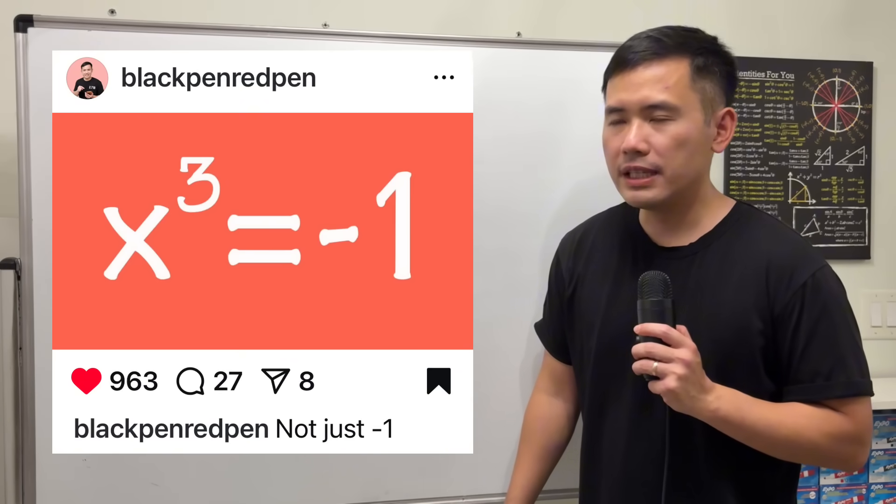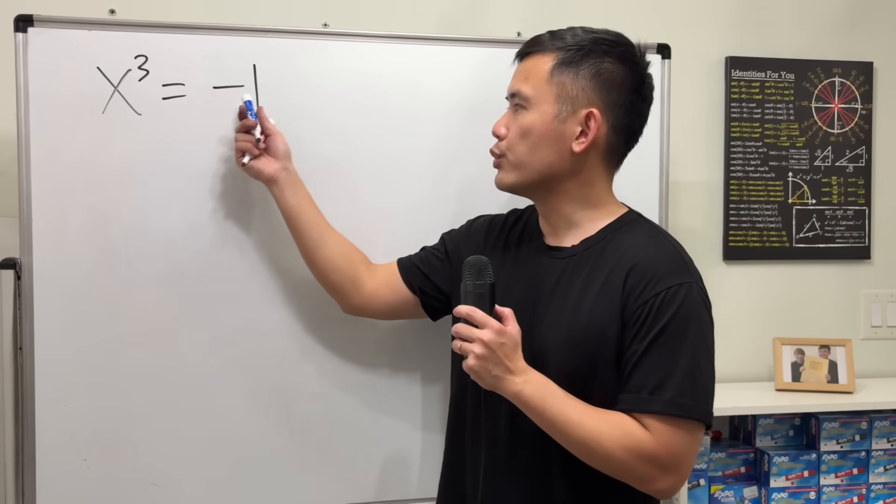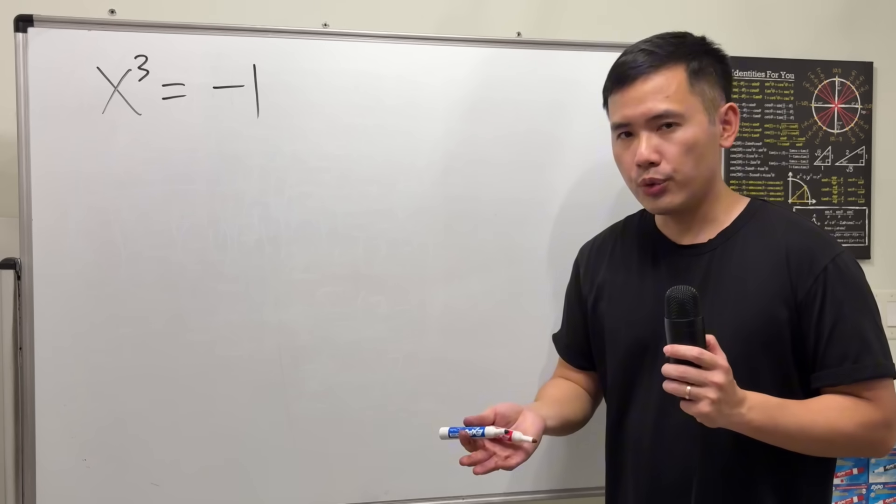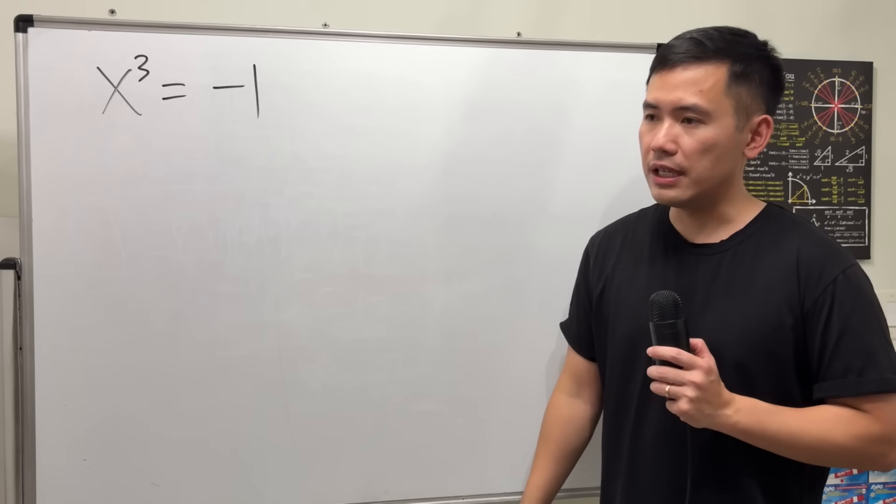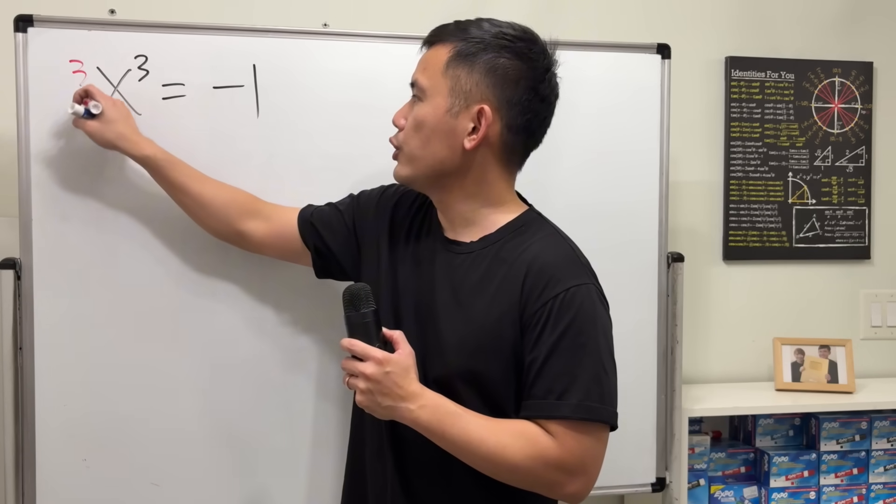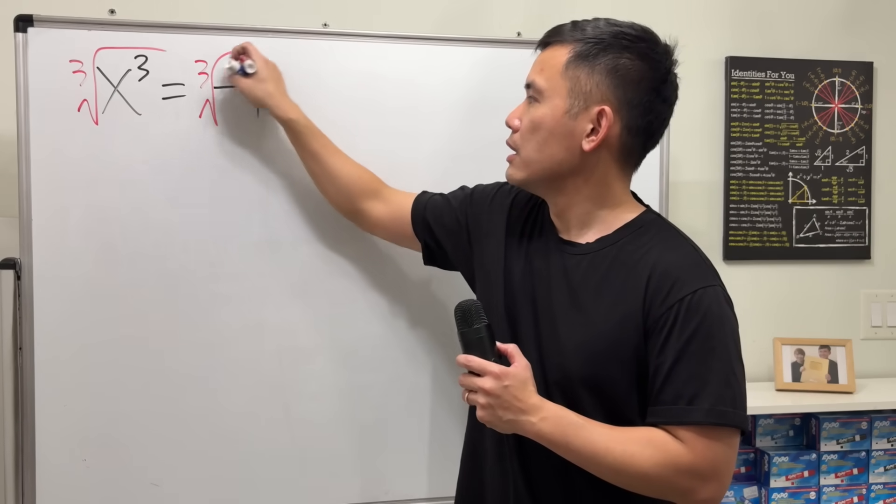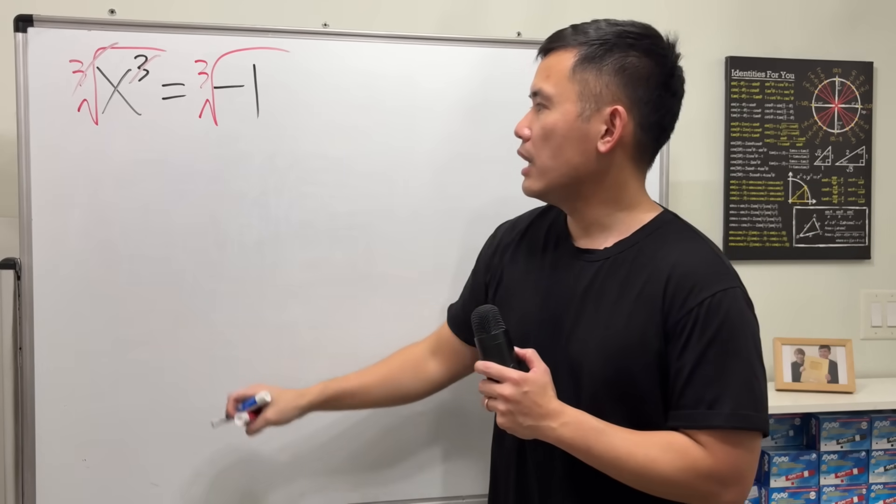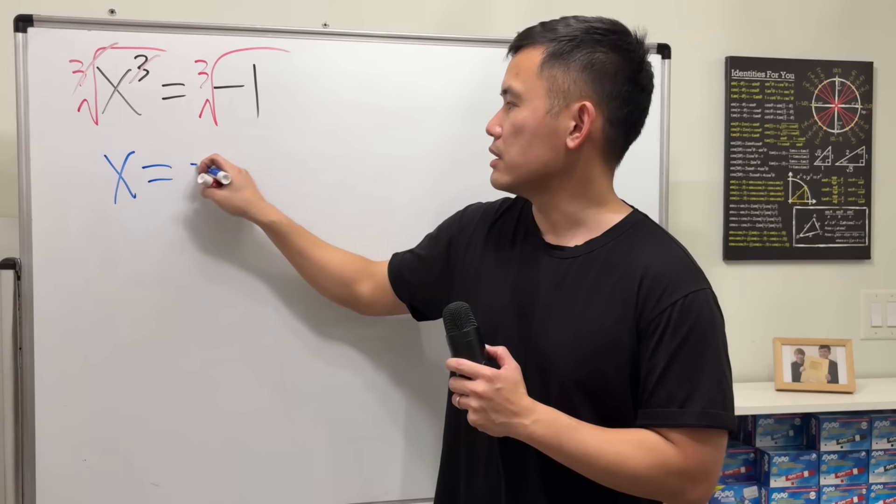So, many people, when they first see the equation x to the third power is equal to negative 1, they might just tell you x is equal to negative 1 is the answer. And if you ask them to show work, they will just take the cube root to both sides, and then cancel, cancel, and they will say x is negative 1.